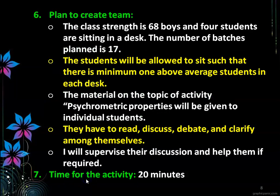Plan to create teams: the class strength is 68 boys, with four students sitting at each desk, and the number of batches planned is 17. Students will be seated such that there is a minimum of one above average student in each desk. Material on the topic of psychrometric properties will be given to individual students; they have to read, discuss, debate and clarify among themselves. I will supervise the discussion and help them if required.